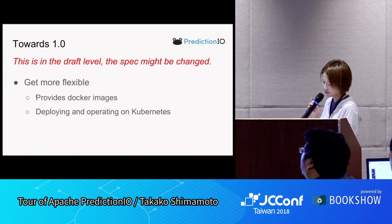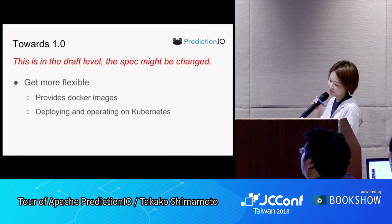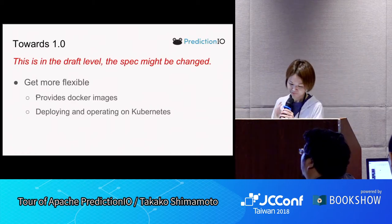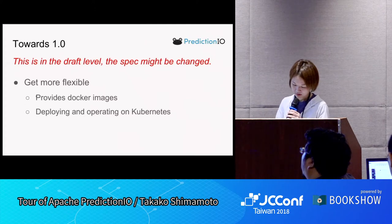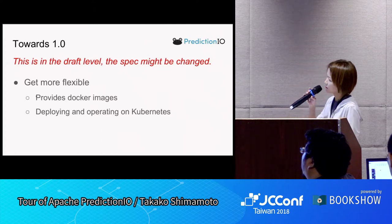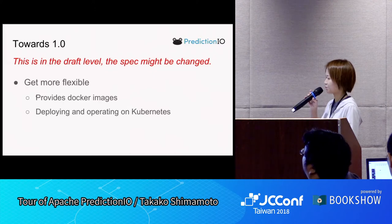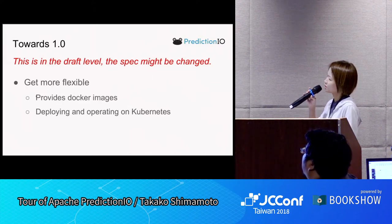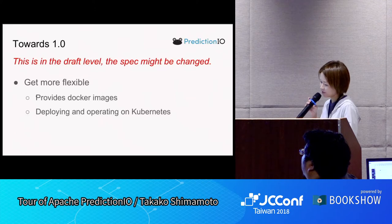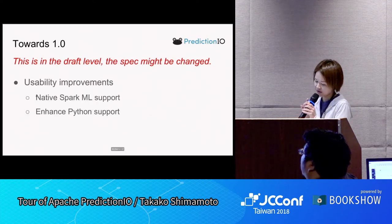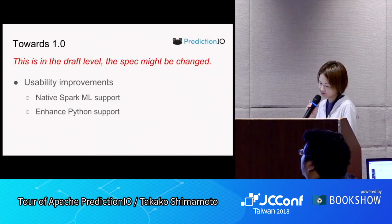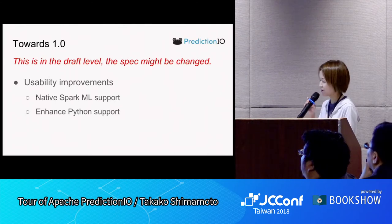This is still at the draft level, so the spec might change. We are considering a new REST-based architecture. The change is aimed at deploying and operating on Kubernetes. We are also considering support for Spark ML and enhanced Python support.